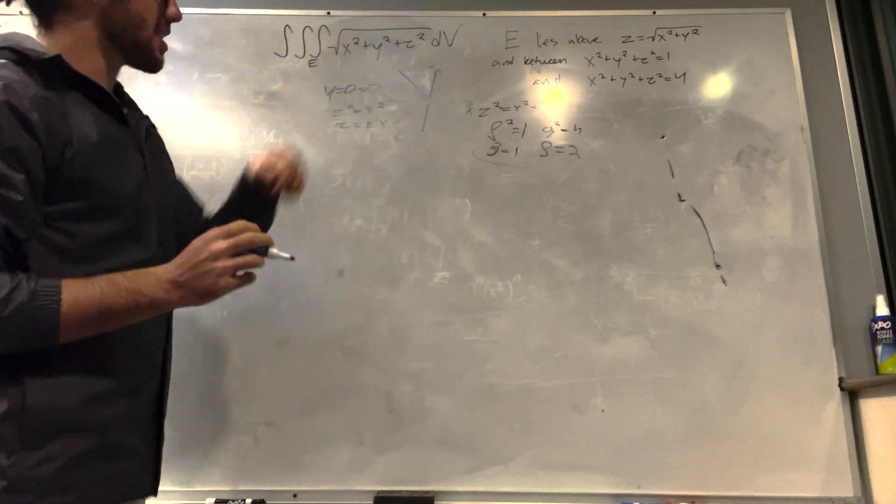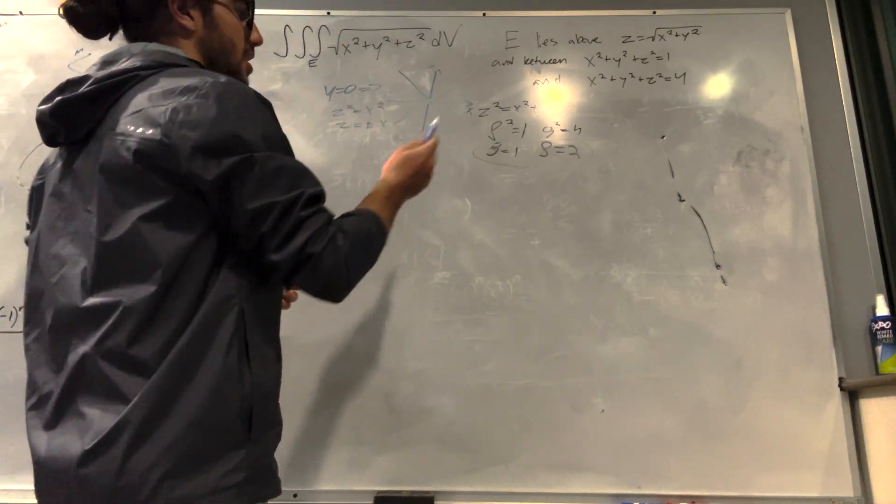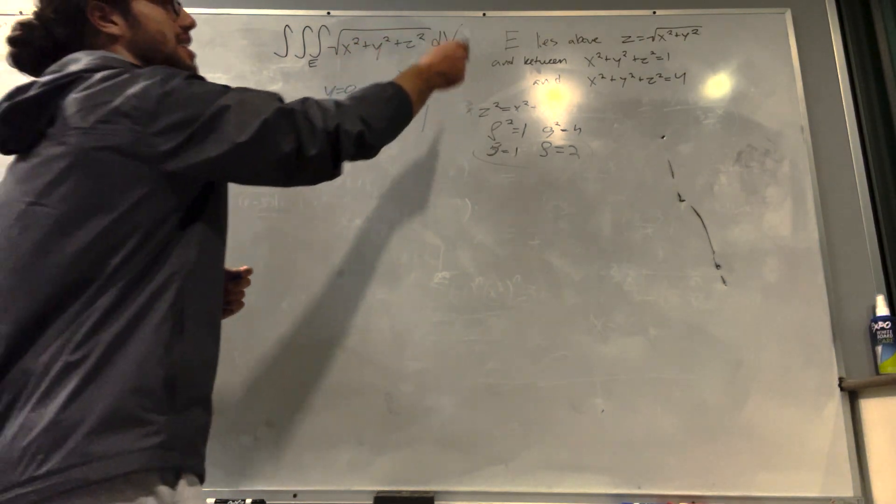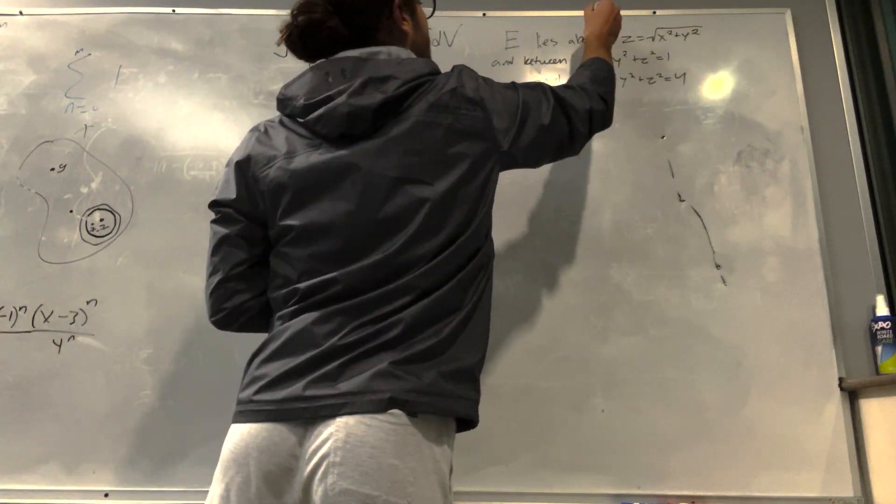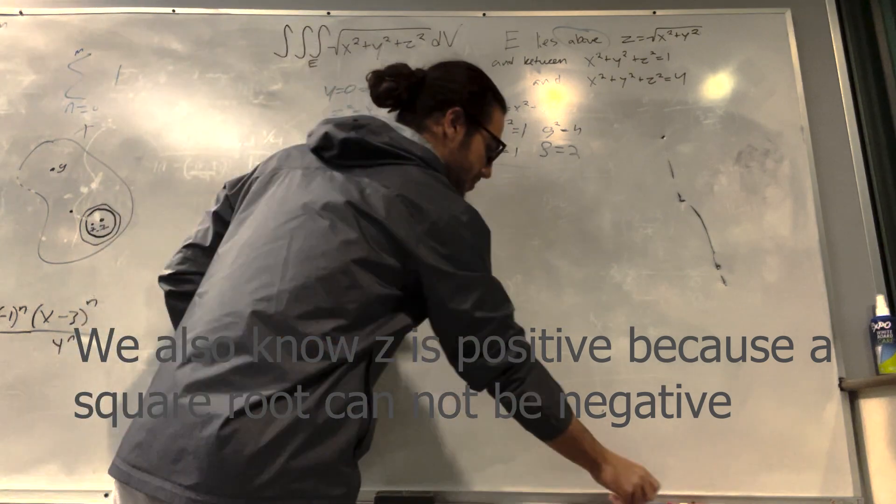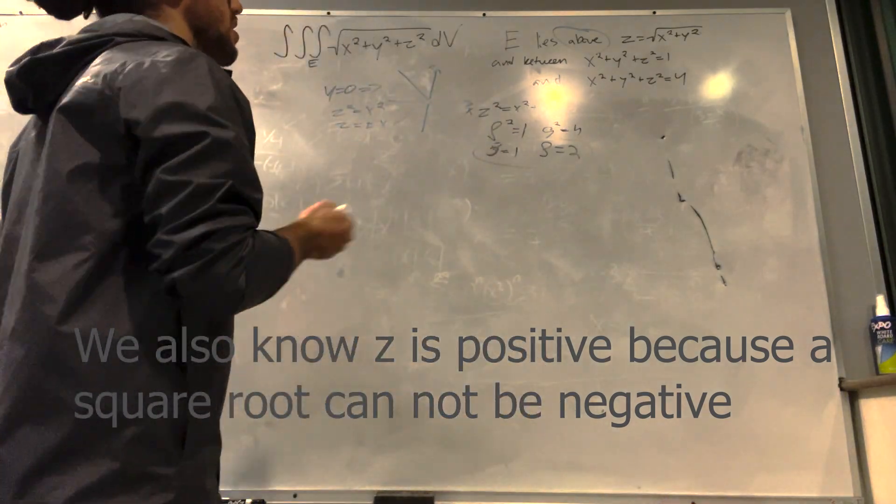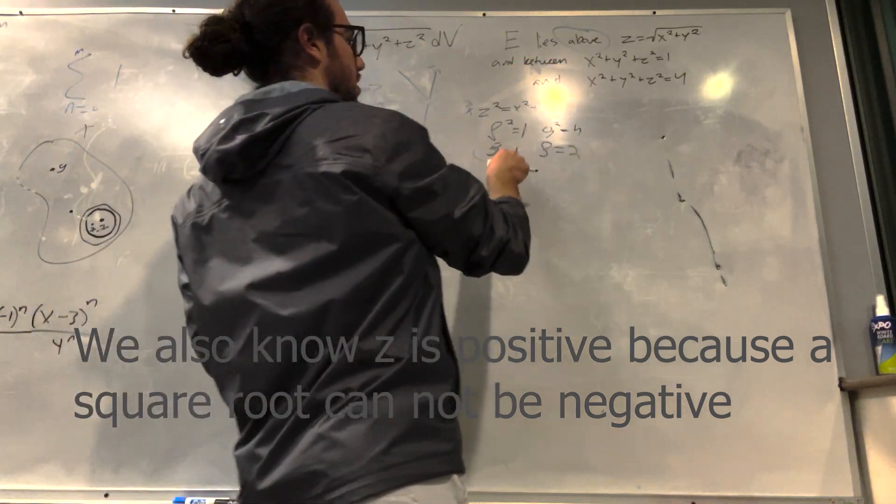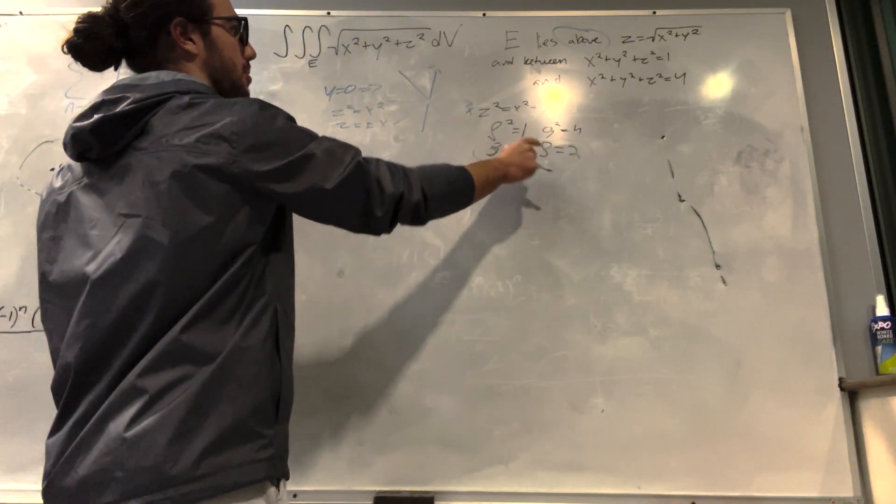But we know that we're going to be in the positive axis because this is, actually we don't know that yet. Let's see. So it lies above the cone. So this is how we know that we're in the positive axis. So we're going to be up here somewhere, and we're going to be in between rho is equal to 1 and rho is equal to 2.